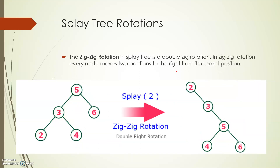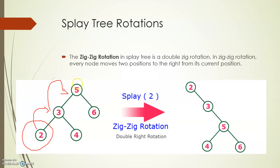The zig-zig rotation moves a node two positions to the right from its current position. Suppose we want to move node 2 to the root. Node 2 first moves to the position of 3, then moves again to become the root. When 2 becomes the root, 3 becomes the right child of 2, 5 becomes the right child of 3, and 4 and 6 become the left and right children of 5.